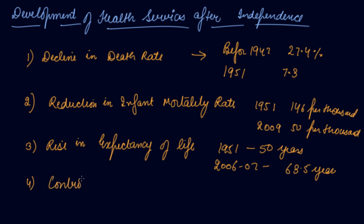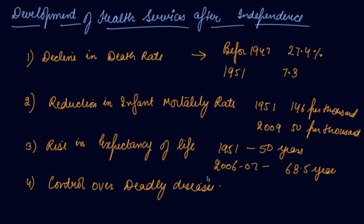Fourth is control over deadly diseases. Deadly diseases like malaria, TB, cholera, and smallpox have been brought under control. Earlier these diseases had a major impact on the country, but now we have medicines and health facilities so these diseases can be controlled.